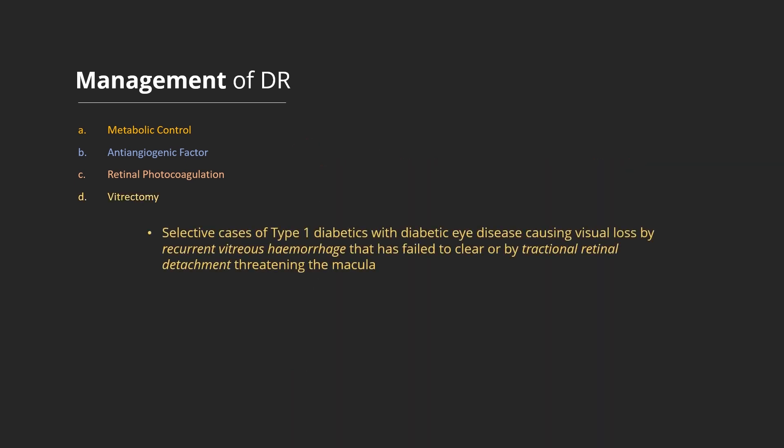Vitrectomy is used in selected cases of advanced diabetic eye disease due to type 1 diabetes, where visual loss has been caused by recurrent vitreous hemorrhage that has failed to clear, or by tractional retinal detachment threatening the macula. The value of vitrectomy in type 2 diabetes is less certain.